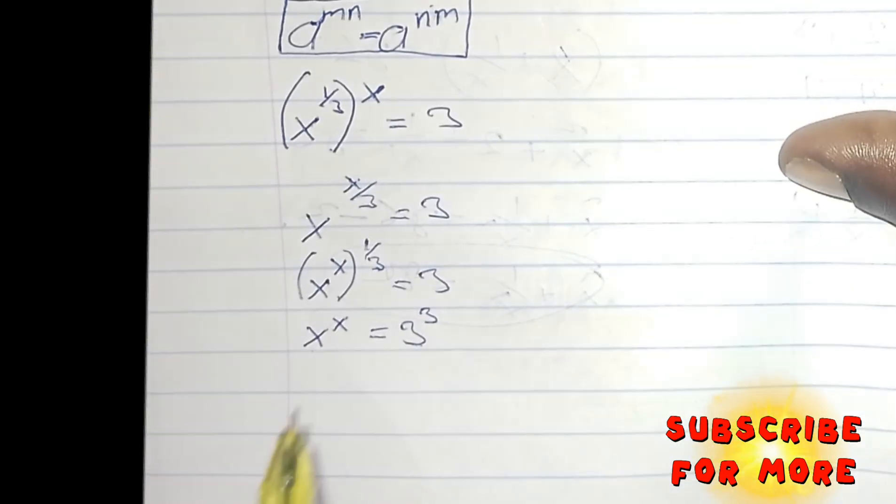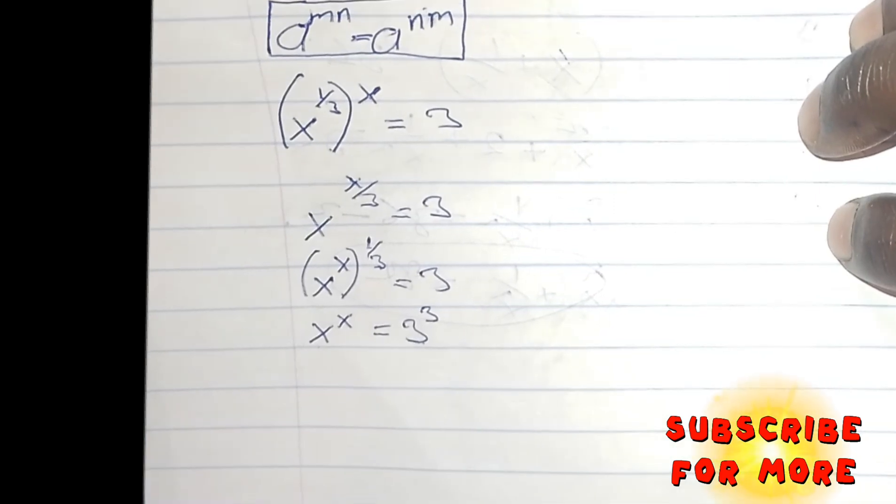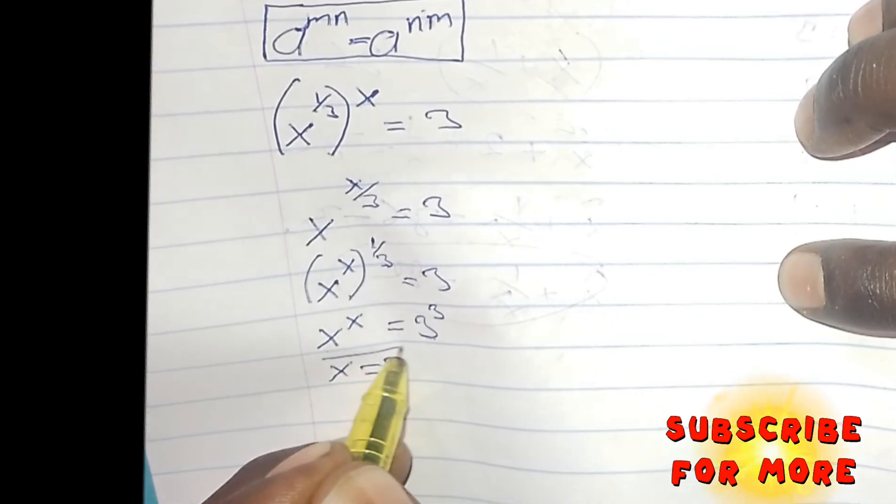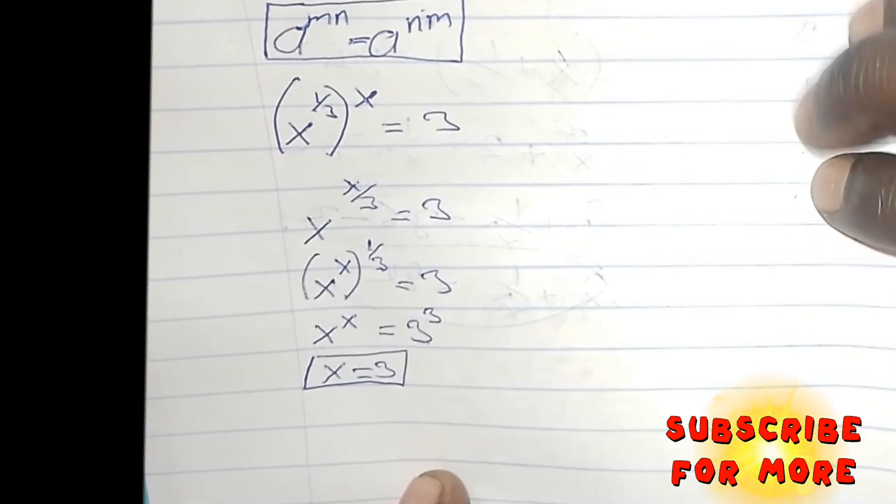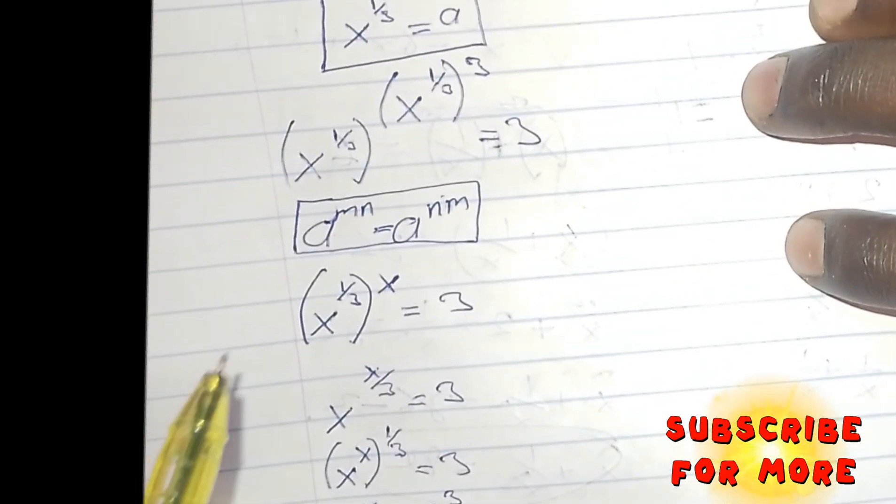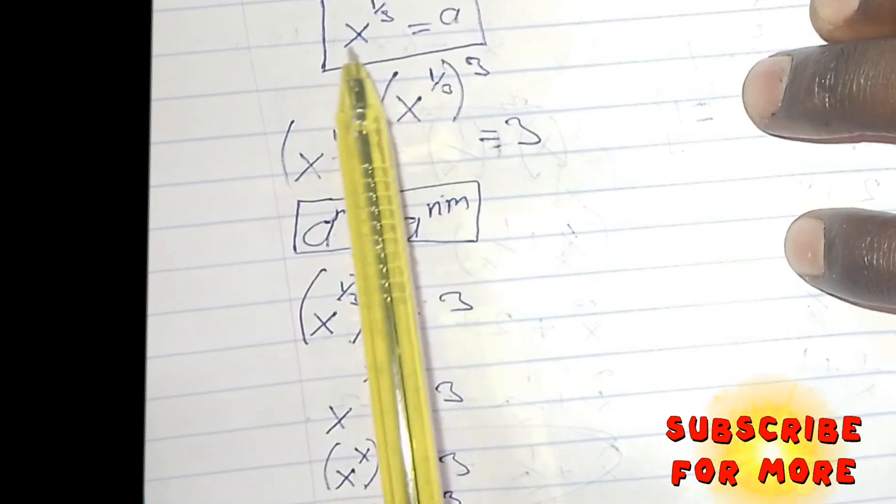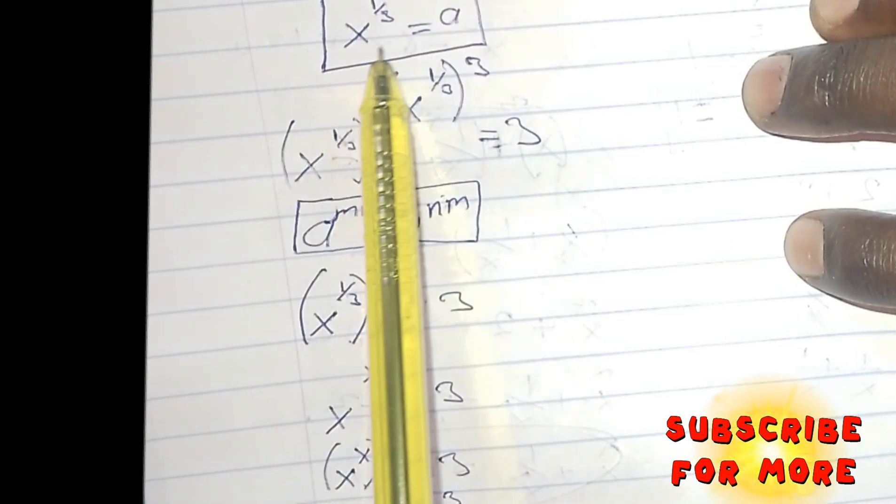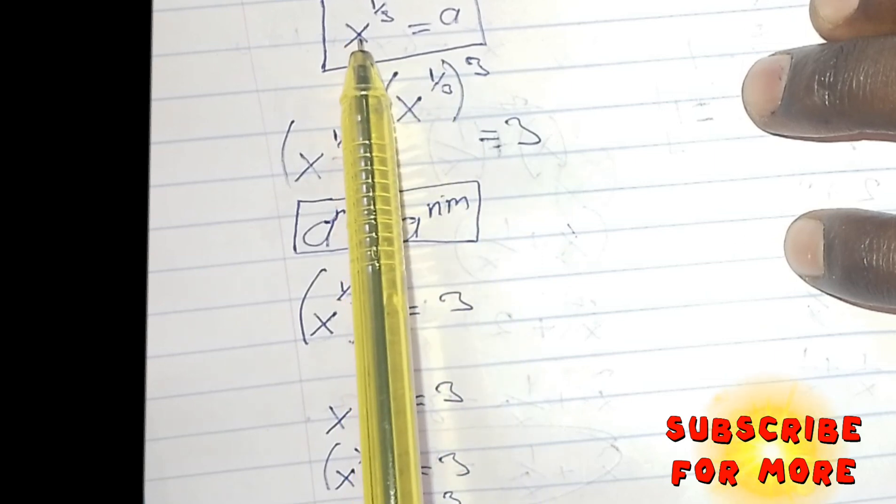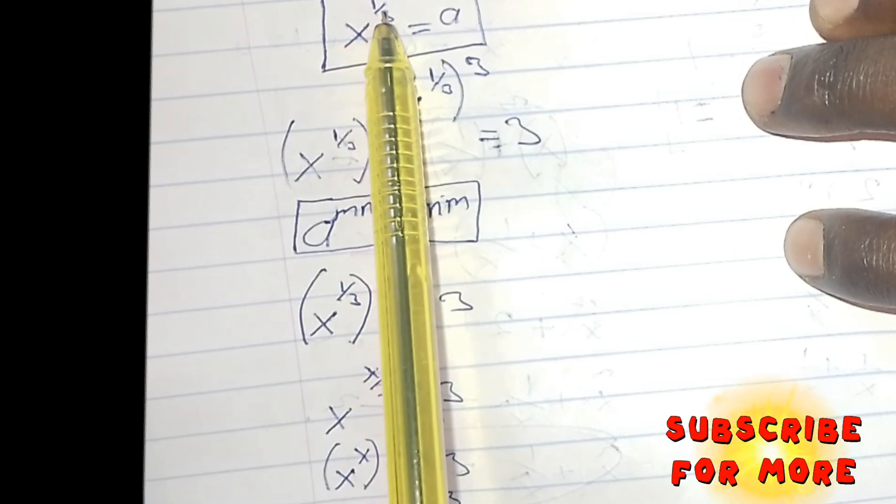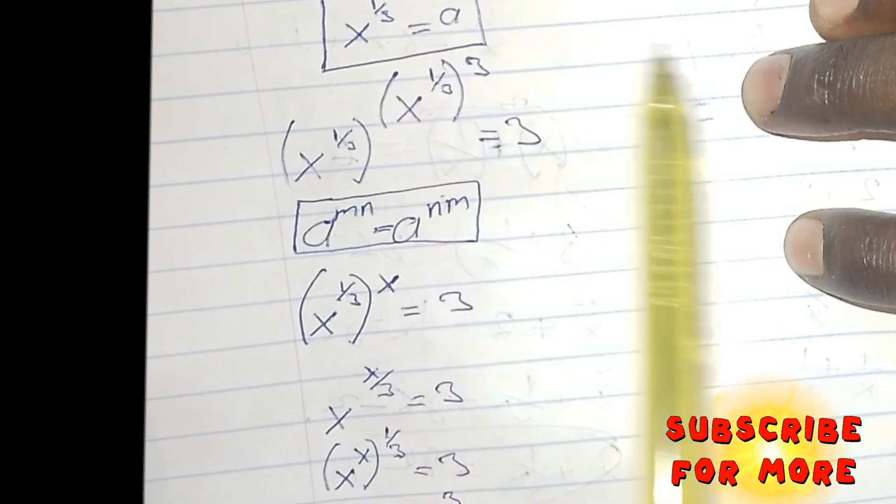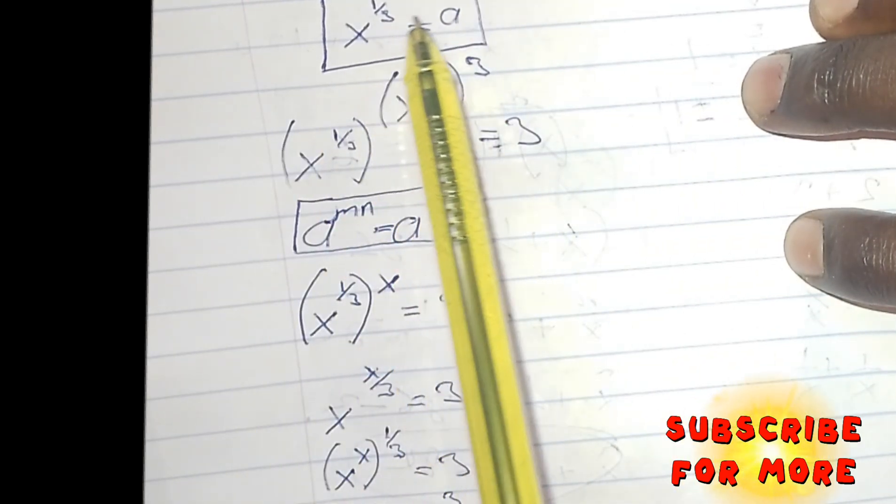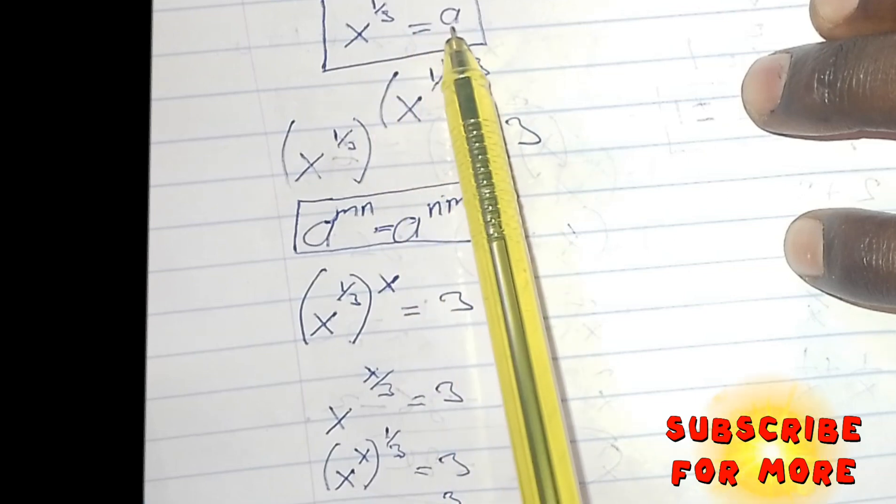I can see that from the powers and from the bases, X is equals to 3. But remember, we were looking for A, and at a particular point, I let X to be equals A cubed, which we later resorted to X raised to the power of 1 over 3 is equals to A. Now that we've gotten the value of X, let me substitute for A.